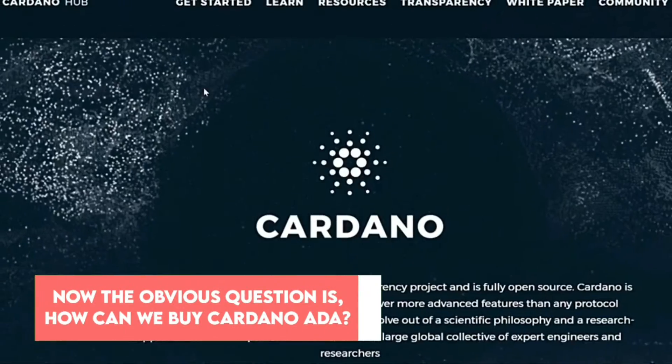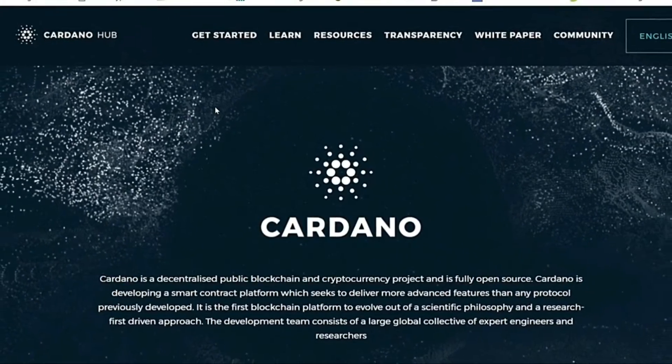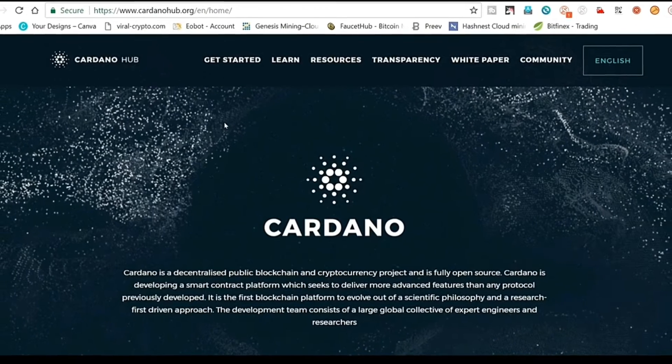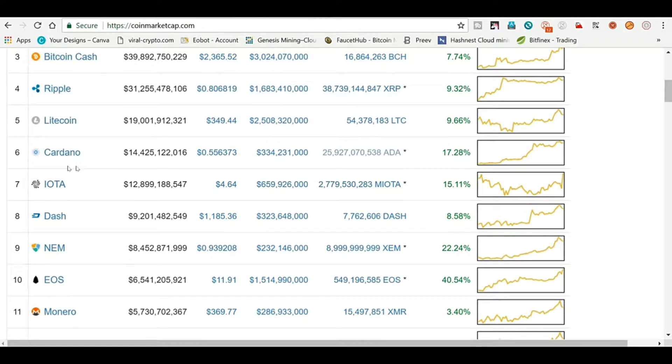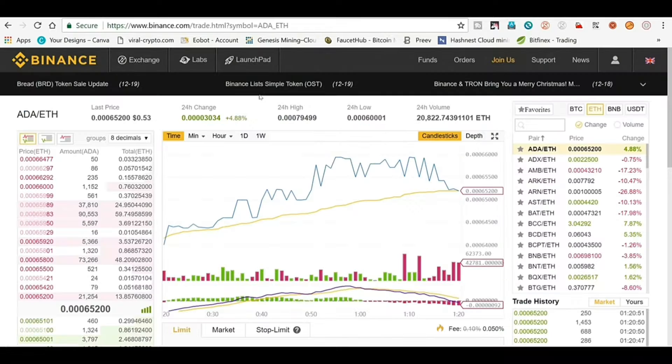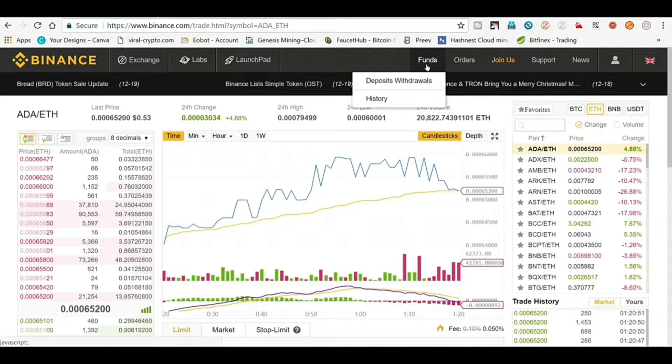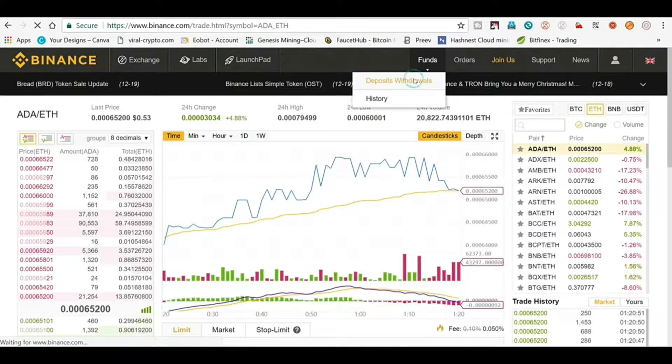Now the obvious question is, how can we buy Cardano ADA? It's a rather simple process that requires creating a Daedalus wallet, which is also essential to create an account in cryptocurrency exchange. The Daedalus wallet is a cryptocurrency wallet from Cardano. The wallet can be downloaded into the computer and installed for further use.